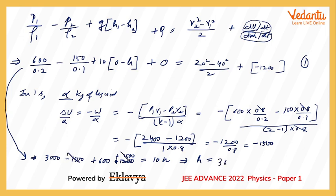Solving: 1500 − 10h = −2100, so 10h = 3600, giving h = 360 meters. This is the correct value obtained by applying the proper version of Bernoulli's equation. When this question was released, many teachers and institutes claimed Bernoulli's equation is not applicable. To be precise: Bernoulli's equation in the form taught in Grade 11 is not applicable, but a more encompassing version — including terms for heat transfer and internal energy — is applicable. I hope you enjoyed the solution. Take care, bye.